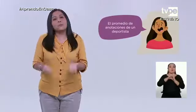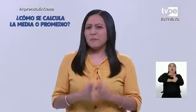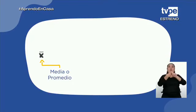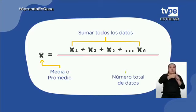Y como no, seguro lo hemos escuchado en los deportes, cuando se comenta sobre el promedio de anotaciones de un deportista. ¿Pero cómo se calcula el valor de la media, también conocida como promedio? Calcularla es súper sencillo. La media, que se representa por una X con una rayita encima, es igual a la suma de todos los datos dividida entre la cantidad total de datos.